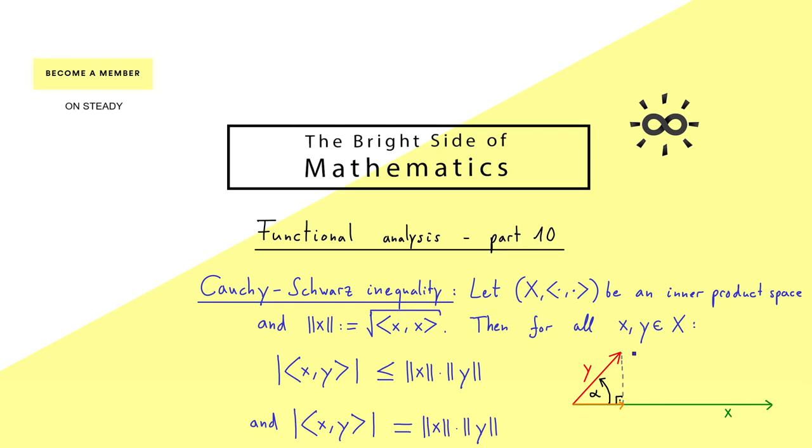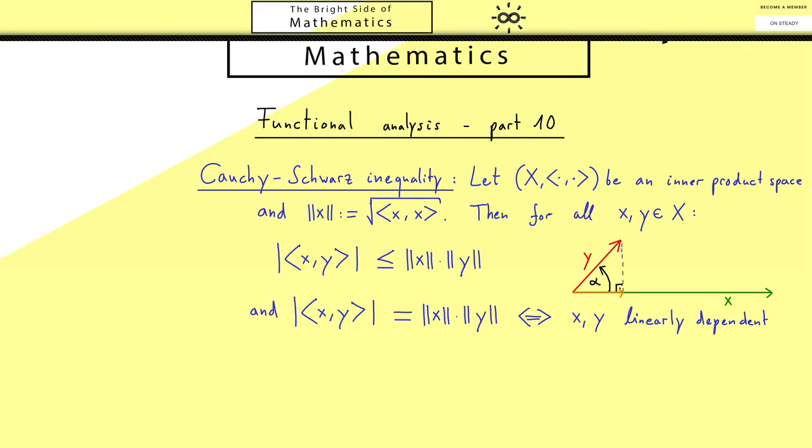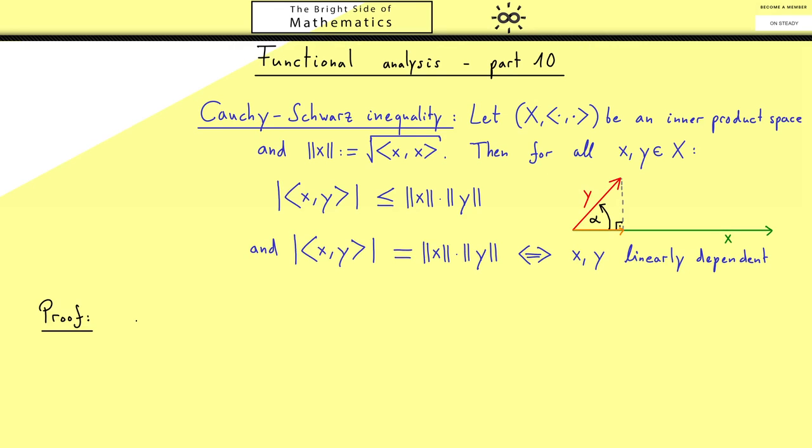With this in mind we also get the result in which cases the equality here holds. Indeed, this should only be the case when the arrows go into the same direction. In other words, x and y are linearly dependent vectors. Okay, now the picture gets us in the correct direction, but we don't have any choice. We need to prove the inequality now.